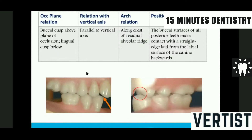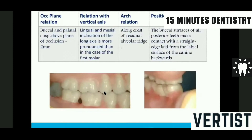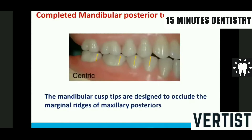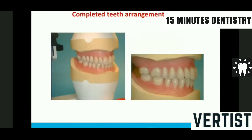For the mandibular first molar, only the buccal cusp is in contact; the lingual cusp — the carodimentary cusp — is much lower. It should be parallelly placed along the crest of the alveolar ridge. The mandibular first premolar comes in contact with the distal marginal ridge of the upper first premolar and does not contact the canine. The mandibular second molar is in the same relation as the lower first molar, with buccal and palatal cusps about 2 mm above the occlusal plane, placed more lingually and more mesially to achieve the anteroposterior curve. This completes the mandibular posterior teeth arrangement, where all cuspids are designed to occlude with the marginal ridges of the maxillary posteriors.